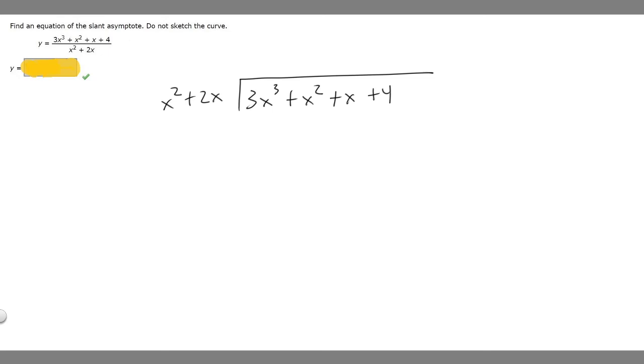And so you have a slant asymptote in your formula or your equation when the highest degree of your variable on top is bigger than the bottom. So in this case, we have a 3 and a 2. So that's the reason why we know this formula has a slant asymptote.